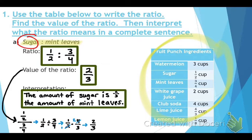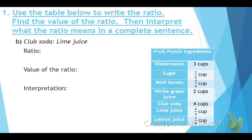The next problem is similar. Try problem B on your own, comparing club soda to lime juice. The ratio is four to four-thirds.